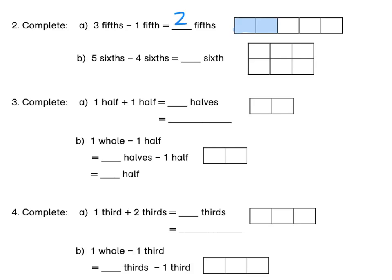For B, it's 5 sixths minus 4 sixths. So 5 sixths means that we have 5 out of the 6 equal parts. We start with 5 sixths, like I've shaded here. Then we minus 4 sixths from that — 1, 2, 3, 4. So we minus any 4, and we're left with 1 sixth.